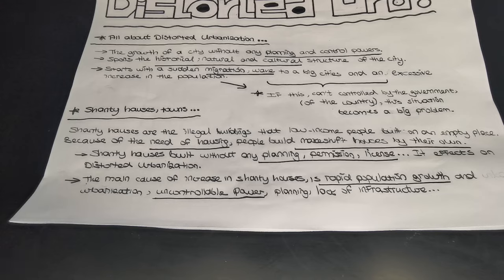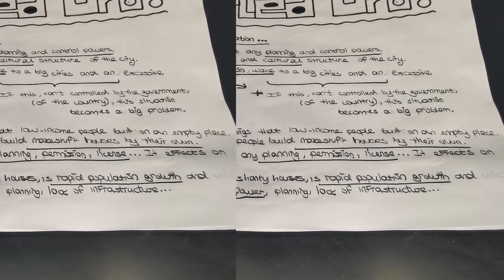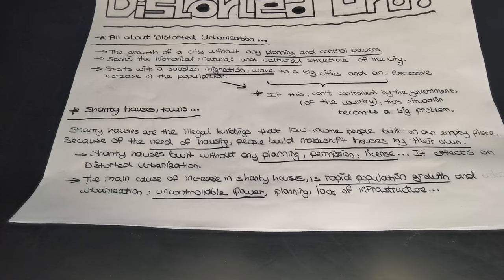The situation refers to the illegal and legal buildings in Istanbul — how urbanization gets bigger in Istanbul. A control power should check this situation in a city to see how distorted urbanization happens and how urbanization gets bigger. It starts with a sudden migration wave to big cities from the countryside, and also increasing population growth, which helps drive distorted urbanization in a city.